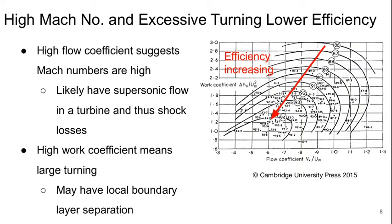We basically see the trend of efficiency increasing as we move to lower work coefficients and lower flow coefficients. If we have a high flow coefficient, that suggests the Mach numbers are going to be fairly high and we're likely to have supersonic flow in the turbine and thus shock losses, which will decrease efficiency. And if we have a high work coefficient, that means we have very high flow turning, which may lead to local boundary layer separation. So those are the two regions where both high flow coefficient and high work coefficient tend to lower efficiencies.